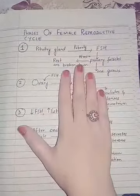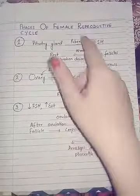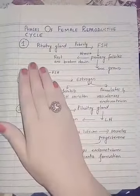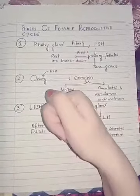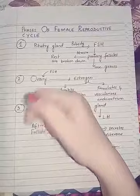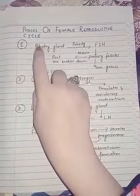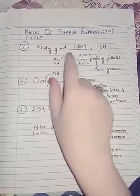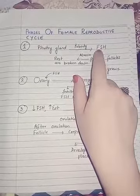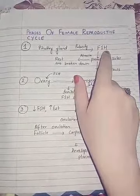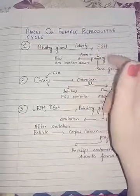Now comes the most important topic: the phases of the female reproductive cycle. As soon as there is the onset of puberty, or the female crosses the age of 13 to 14 years, her pituitary gland starts secreting FSH — follicle stimulating hormone. The follicle stimulating hormone stimulates the production of primary follicles.